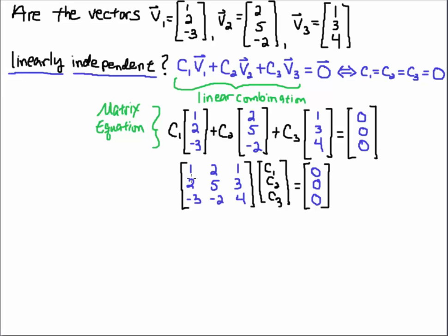If you look what you're doing, you're taking C1 and multiplying it by the first column, you're taking C2 multiplying it by the second column, you're taking C3 and multiplying it by the third column. So when you write a linear combination like this one, this is really matrix vector multiplication. So you now have a matrix equation.